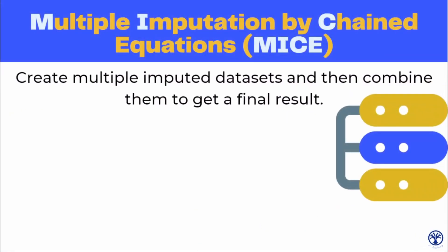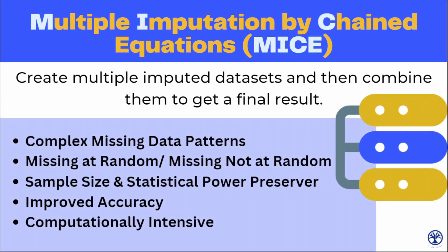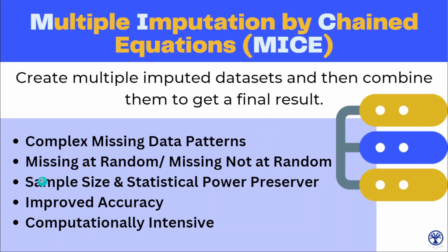MICE is actually a short form of Multiple Imputation by Chain Equations. It's a very powerful method used to impute missing values in a dataset. The main idea behind MICE is to create multiple imputed datasets and then combining them to get a fair result. Somehow it uses regression techniques, and because of the nature of MICE, it is well suited if you are dealing with a complex dataset.